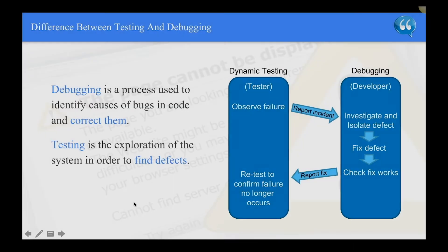One thing a tester has to understand is the difference between testing and debugging. Debugging is a process used to identify causes of bugs in code and correct them. Testing is the exploration of the system in order to find defects. In dynamic testing, the tester observes the failure and reports it to the developer. The developer starts debugging, investigates and isolates the defect, then fixes it. The developer checks the fix and reports it back to the tester, and only then can the tester retest and confirm the failure no longer occurs.